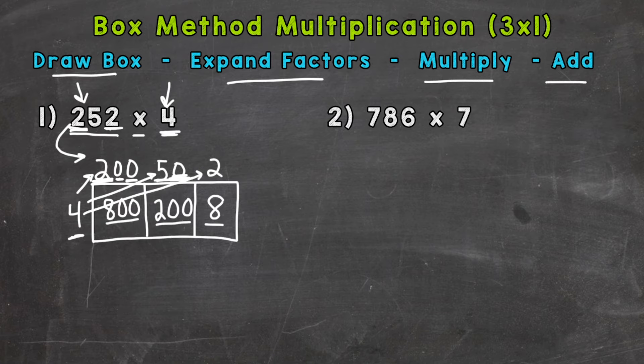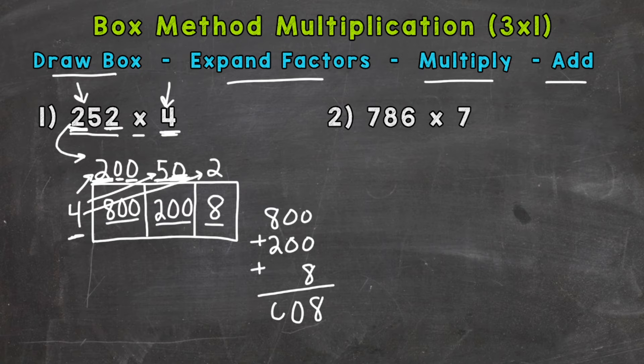So we take our three numbers, the 800 plus the 200 plus the 8, and that's going to give us our product. A product is an answer to a multiplication problem. So we have 8 here, 0, and then 8 plus 2, which is 10. So 1008.